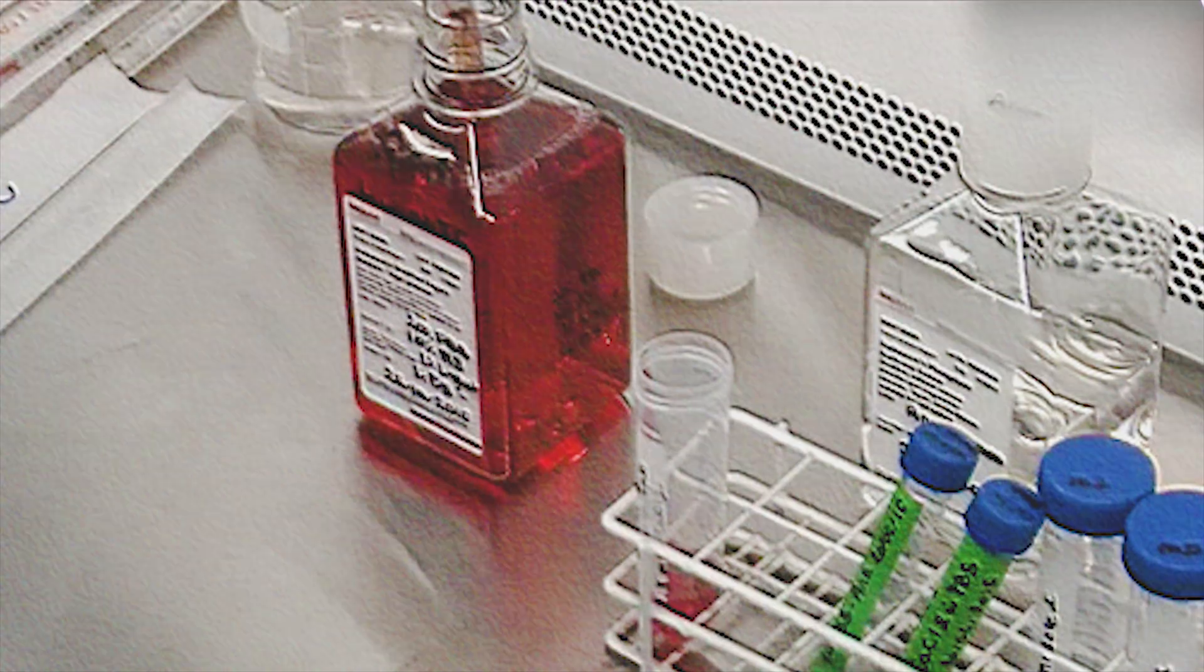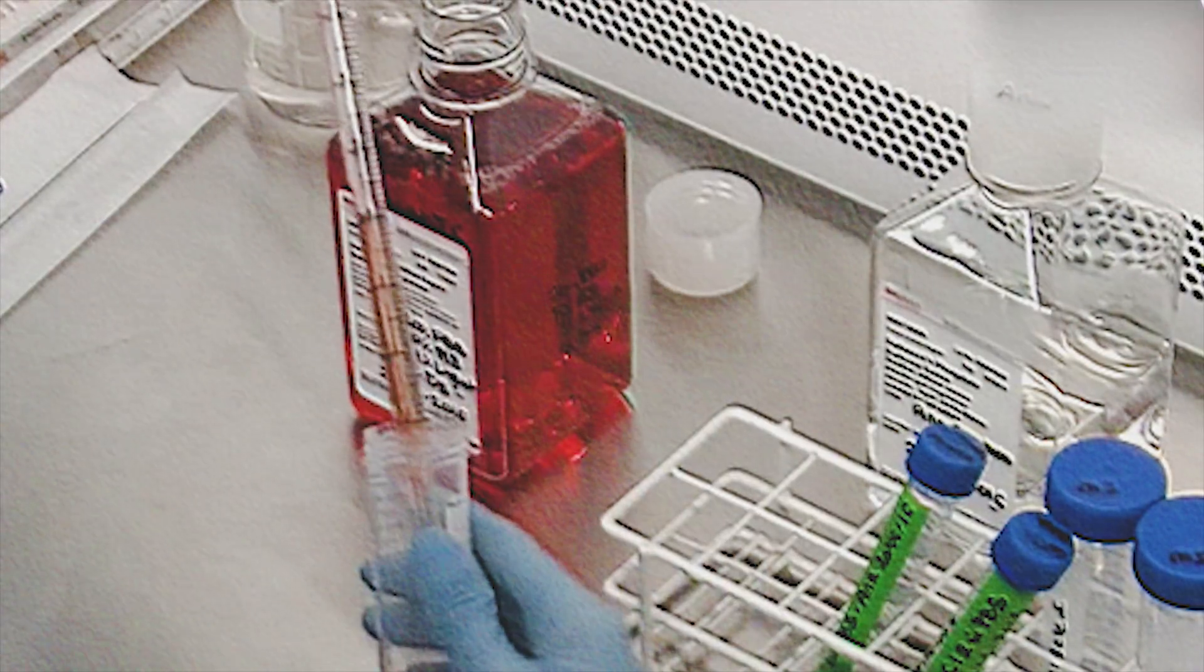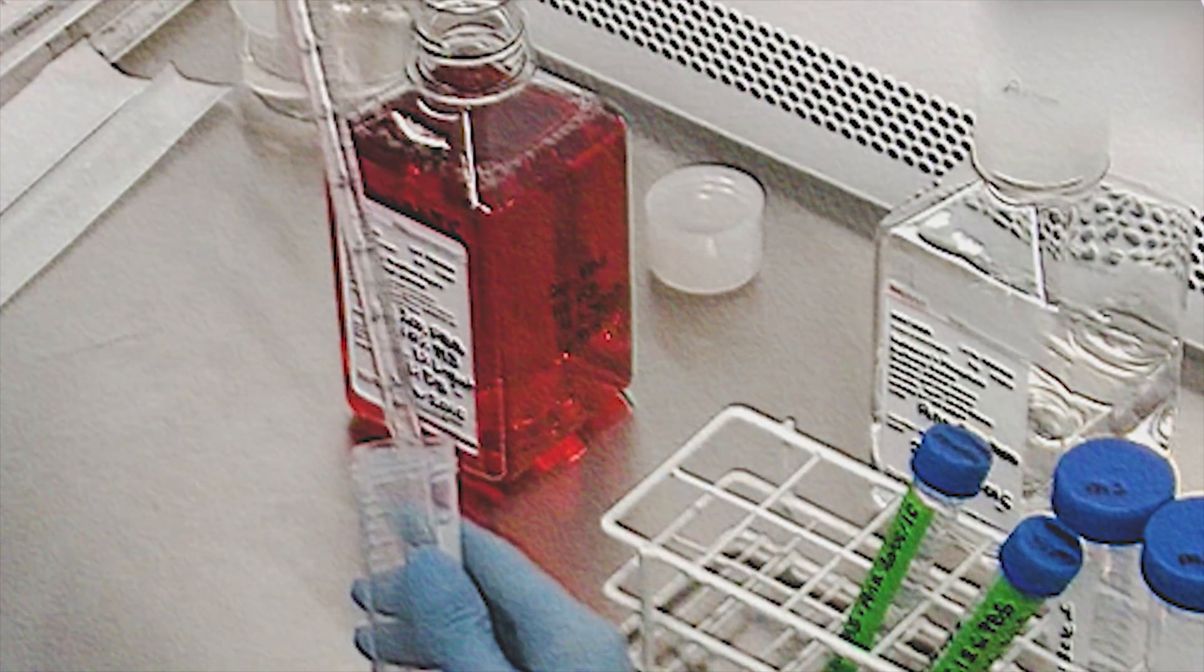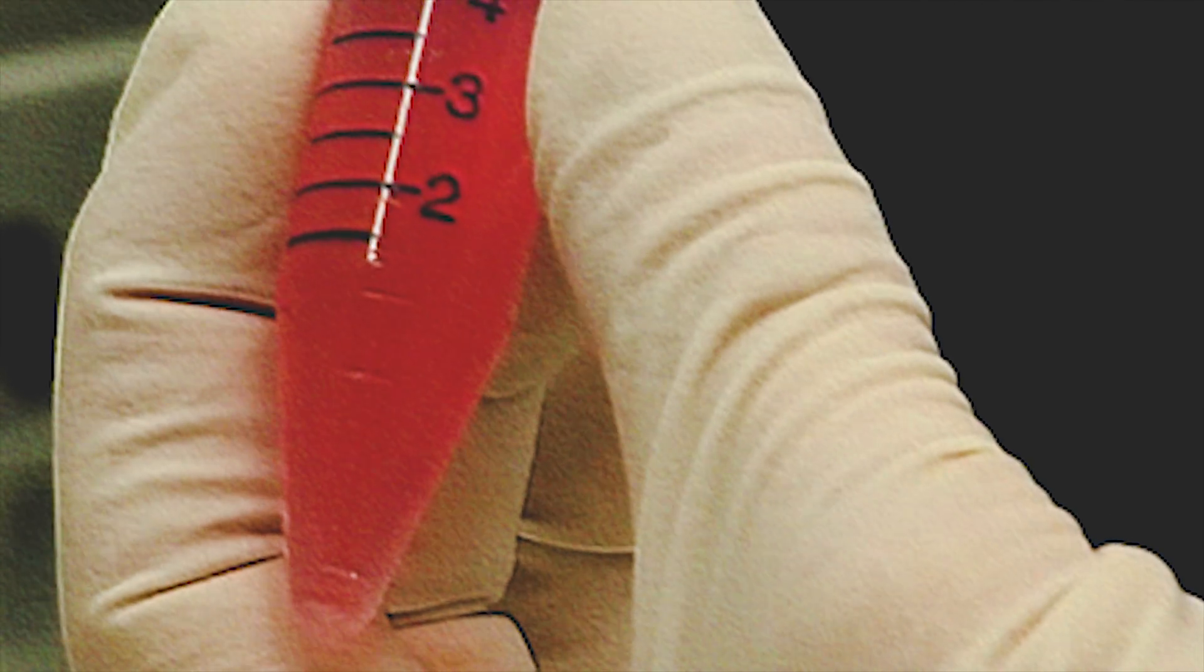Another obstacle to growing meat artificially is the fact that animal serum, that is blood with the blood cells and blood clotting proteins removed, has been traditionally used as part of the growth medium. It provides the cells different factors they need for growth, but it's expensive and not something you'd want to use on an industrial scale.